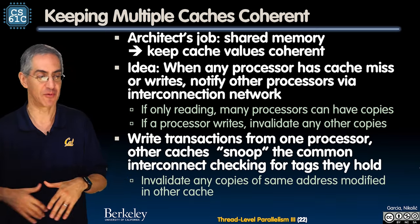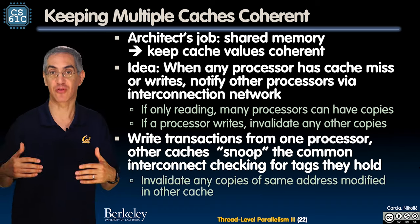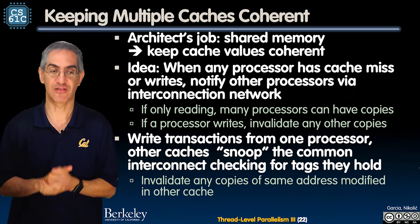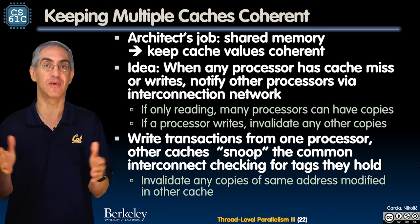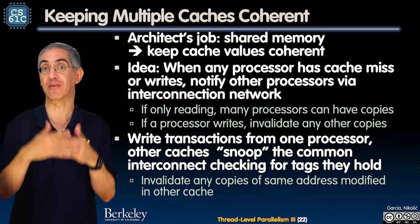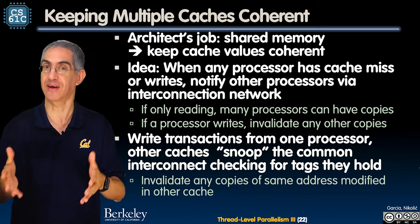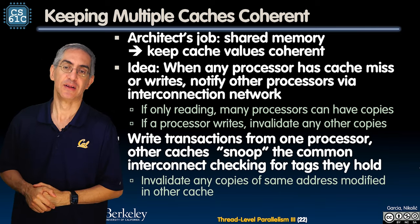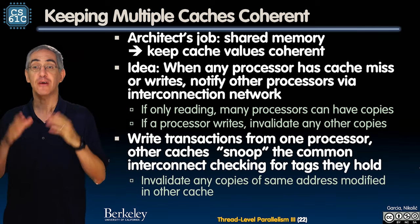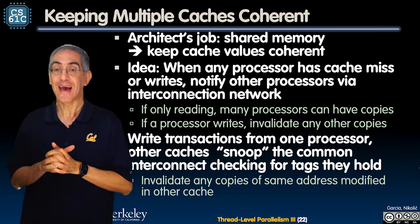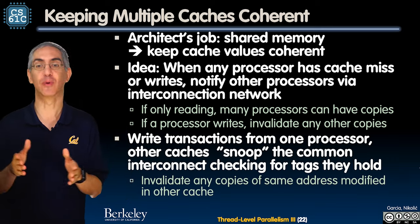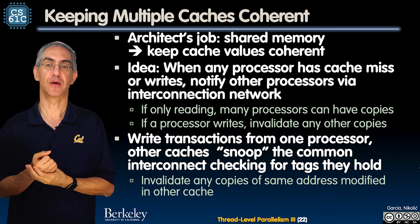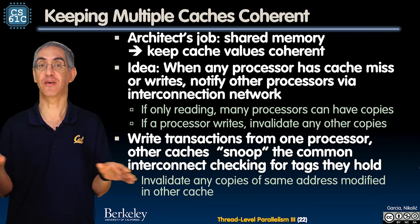The same value should be returned with or without caches, and also with multi-core — if you do it right, just adding more cores and parallelism shouldn't change the value, just give it to you faster. Here's the model: when any processor has a cache miss or write, you have to notify the other processors.